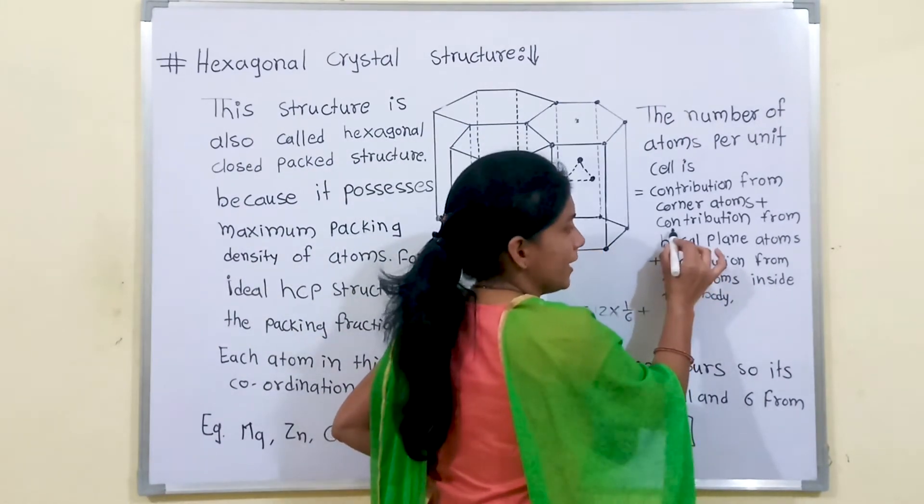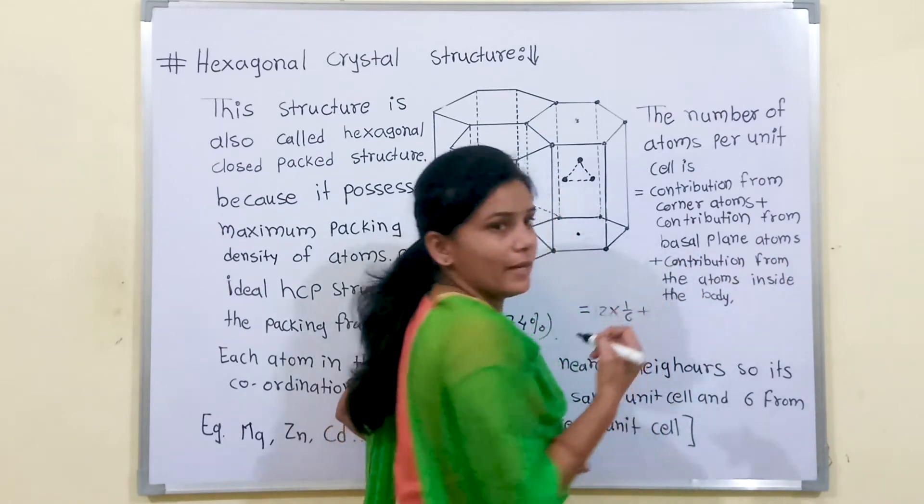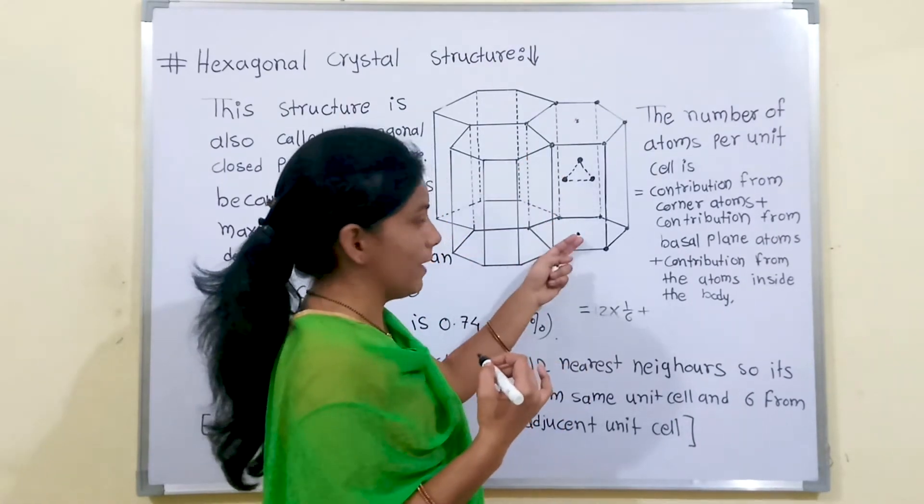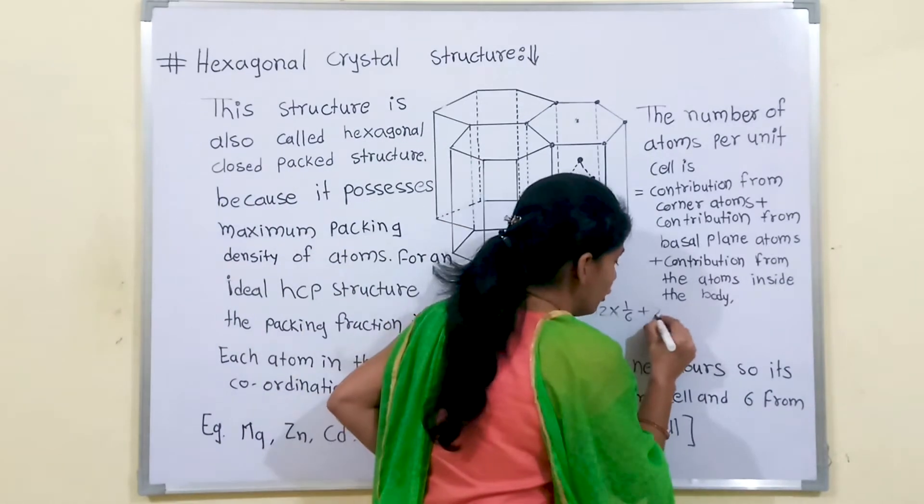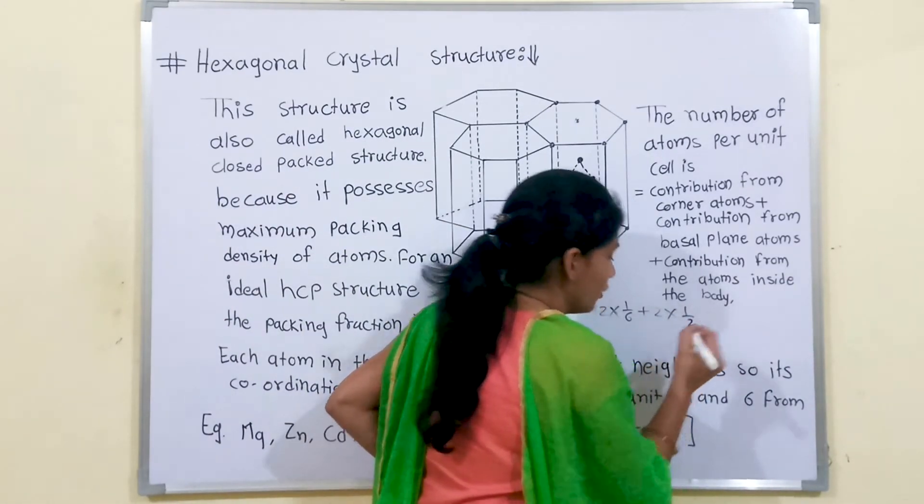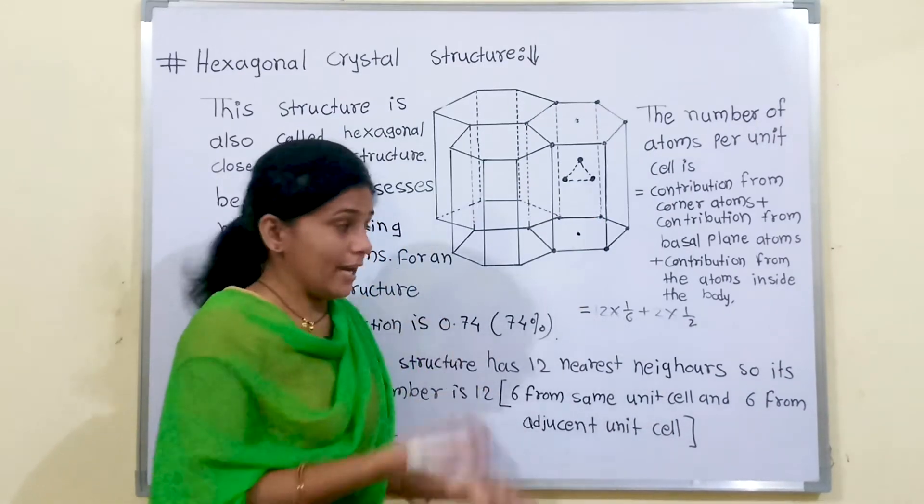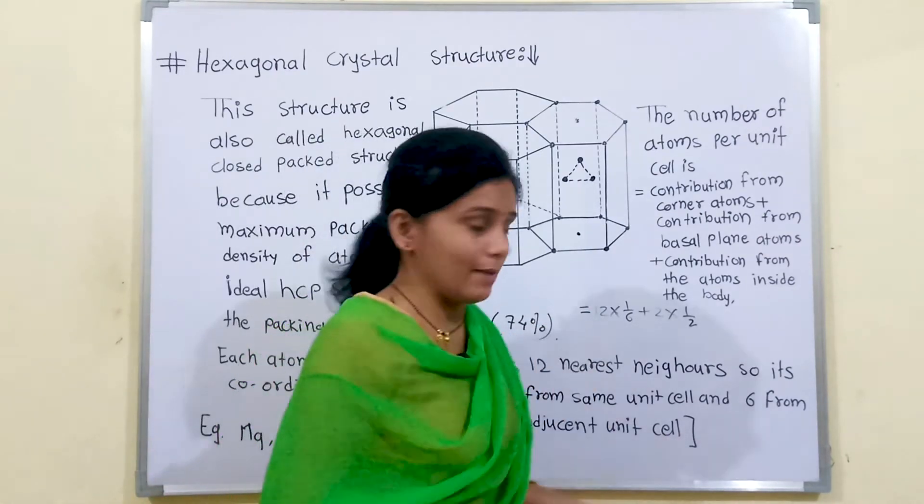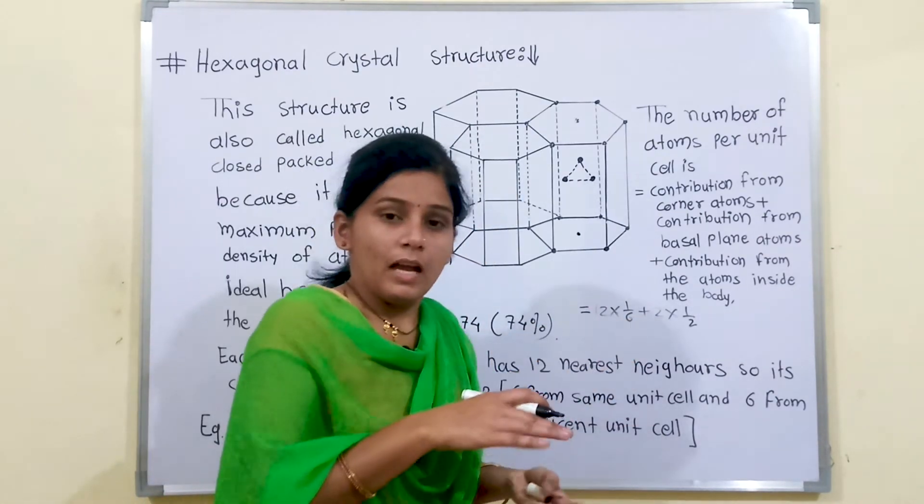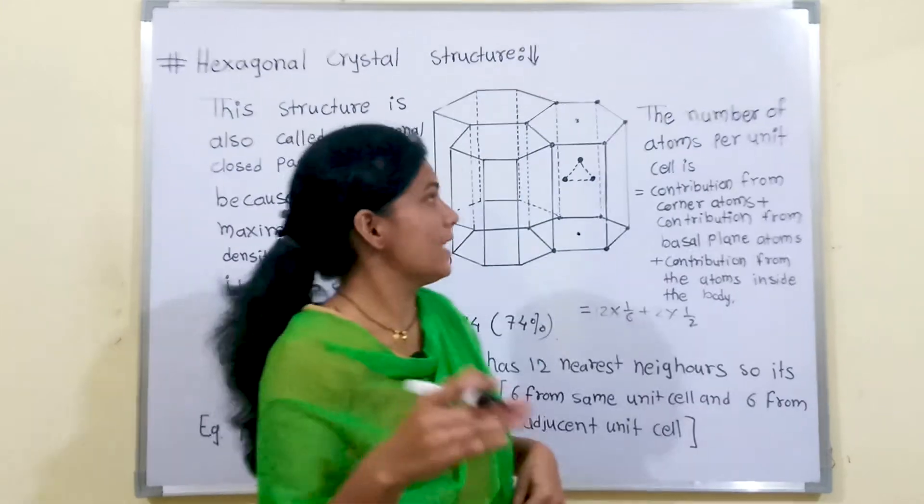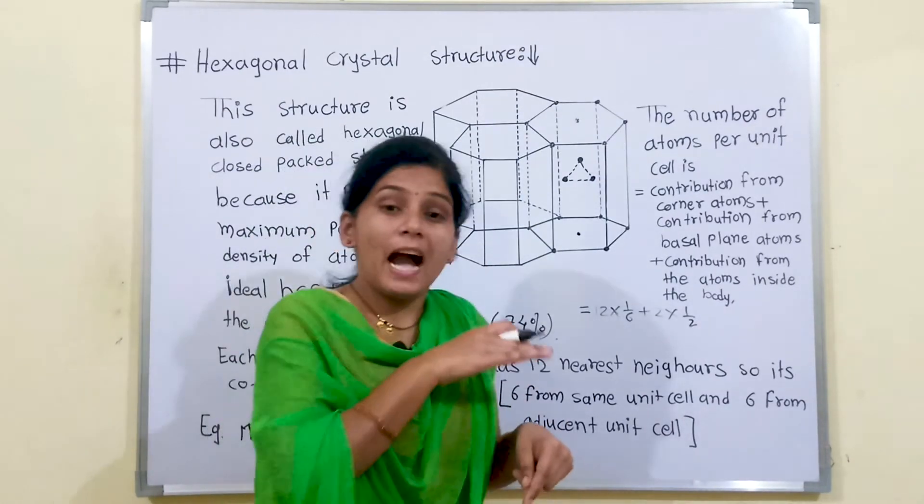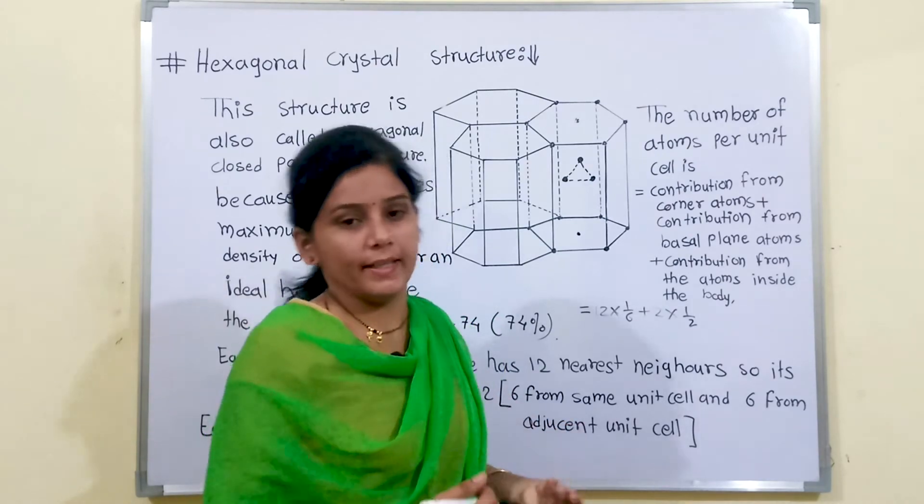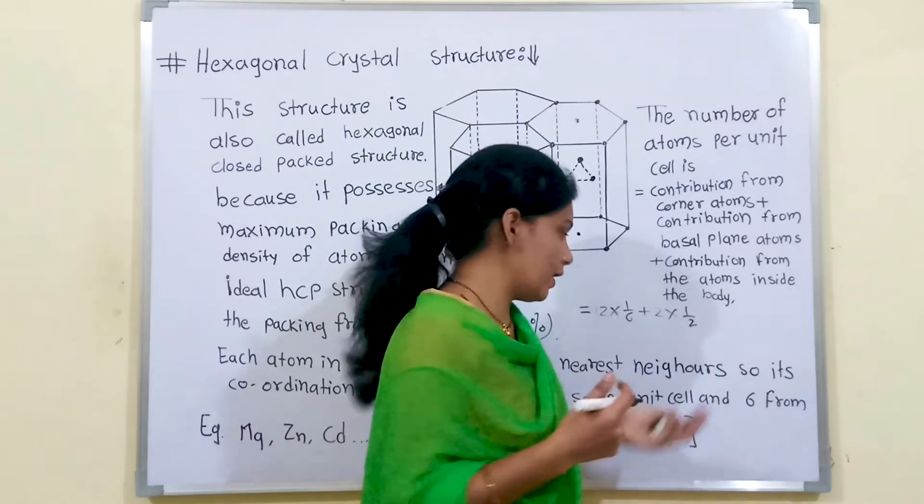Next is contribution from the basal plane atom. We have 2 basal plane atoms. Here is one and here is second. 2 into 1 by 2 because the atoms at the faces, only half part is contributed in that unit cell.